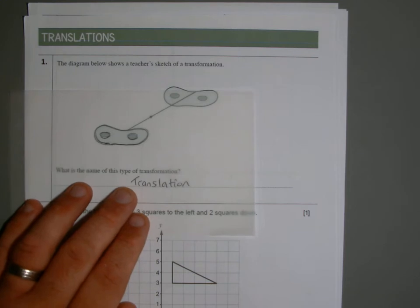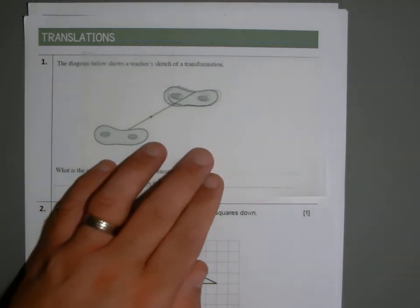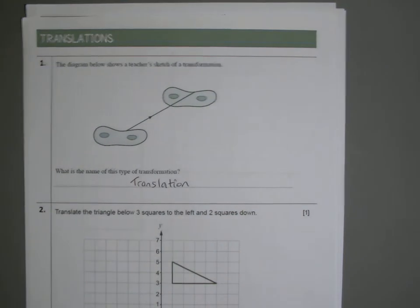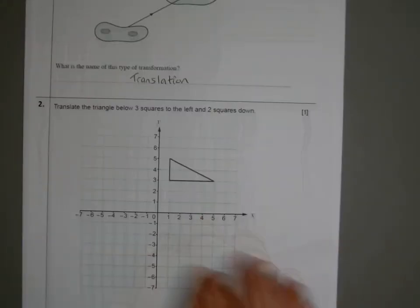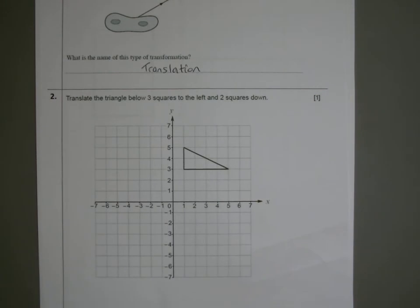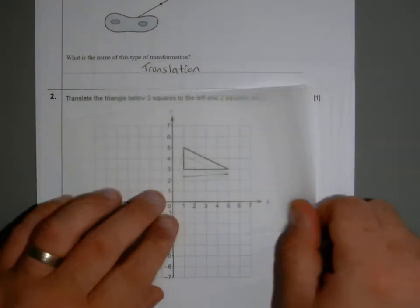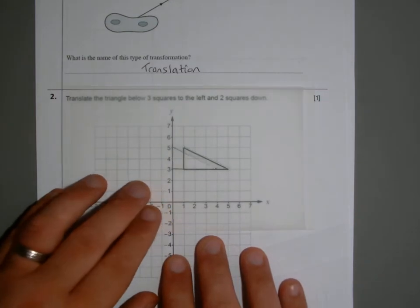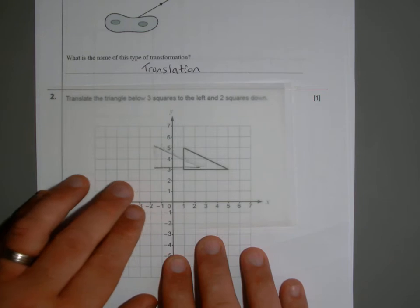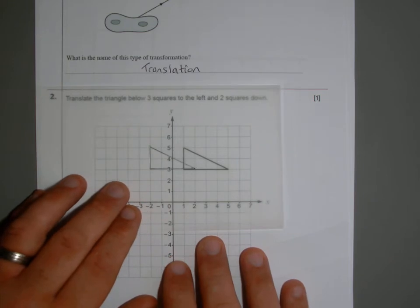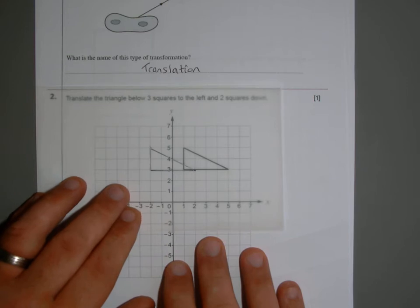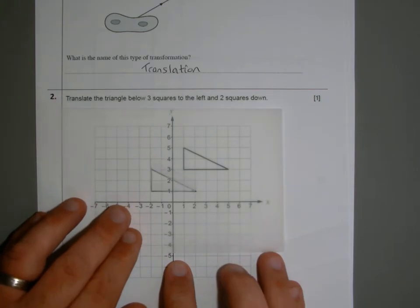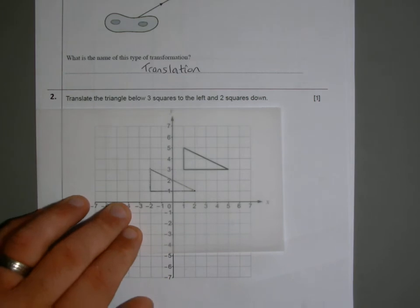It is simply a translation because it's shifted perfectly across the page. So we can do the same sort of thing with question two. It says translate the triangle below three squares to the left and two squares down. Tracing paper can be useful here. So if you trace the shape, three squares to the left — one, two, three — then two squares down — one, two — and there is your shape shifted.